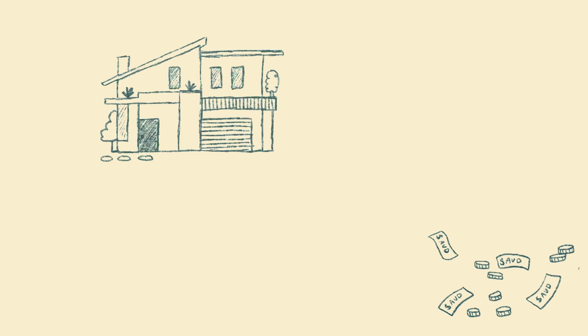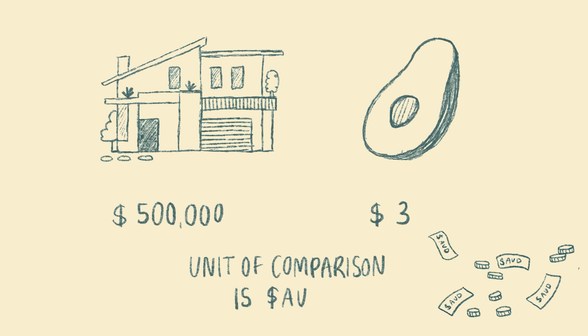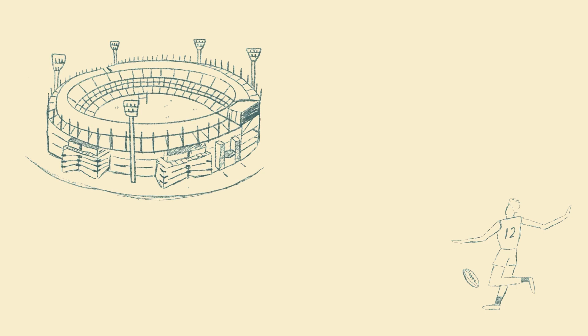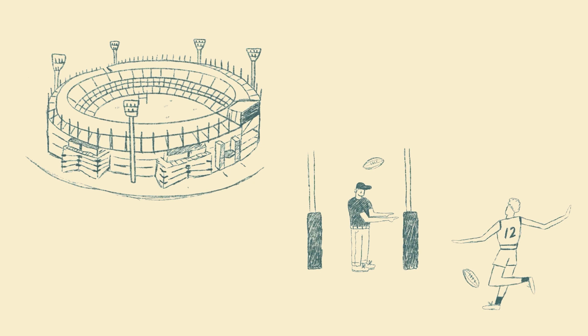Dollars are the units we use to work out how much something is worth — a house might be worth $500,000 and an avocado might be worth $3. In a game of Australian rules football, the units we use to keep track of who is winning are goals and points; six points make a goal. When a player kicks a goal, the umpire issues six points to that team. The umpire never runs out of points and doesn't have to collect them first before issuing them. In the same way, a currency issuer — our federal government — is the scorekeeper of dollars. They never run out, don't need to collect them first, and are the only ones who can issue them.